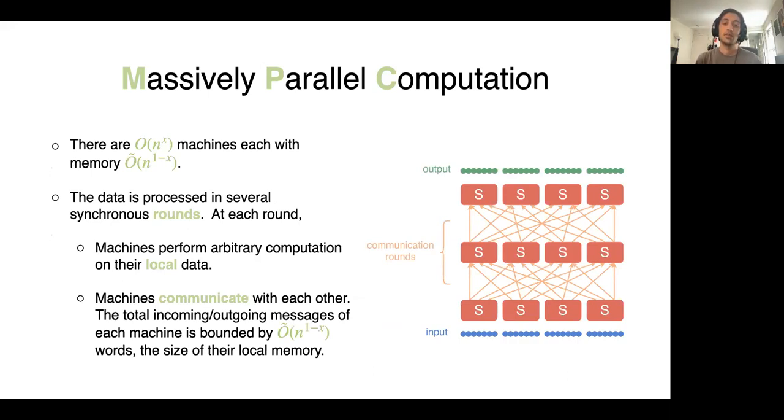At each round, each machine can perform a local computation on the data that it has. At the end of each round, the machines can communicate with each other so that the total size of incoming and outgoing messages of a single machine is bounded by its memory or n^(1-ε).